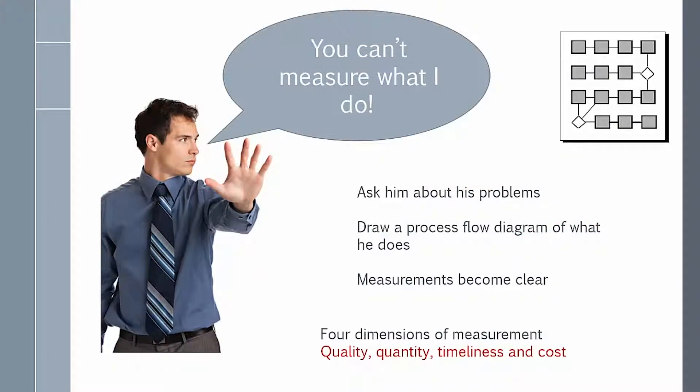But you always have somebody who says, you can't measure what I do, a control chart doesn't apply to me. Well, if you run across that person, talk to him about his problems. He'll tell you what needs to be measured when he talks about his problems. Or draw a process flow diagram of what he does. The measurements become clearer and clearer. And when you talk about measuring and control charts, remember the four dimensions of measurement: quality, quantity, timeliness, and cost.